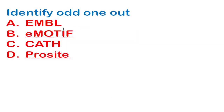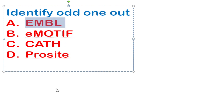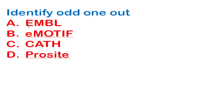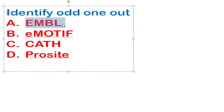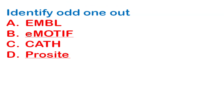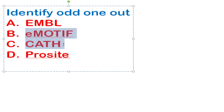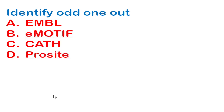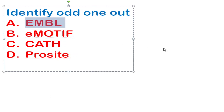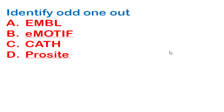The next question asks to identify the odd one out. The correct answer is EMBL, which is a primary nucleotide sequence database, whereas EMOTIF, CAF, and PROSITE are secondary structure databases that hold motifs and domains of proteins.